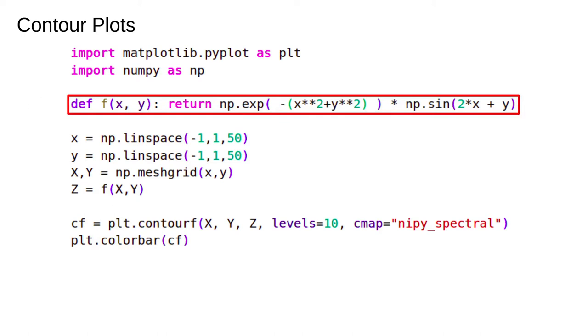This is just a function that returns an interesting shape. In practice it will be replaced with your measured values. Note that it has to return something for every possible combination of x and y. In the case for your read-in data that means you need an observation for every input, for example terrain height at every value of latitude and longitude.